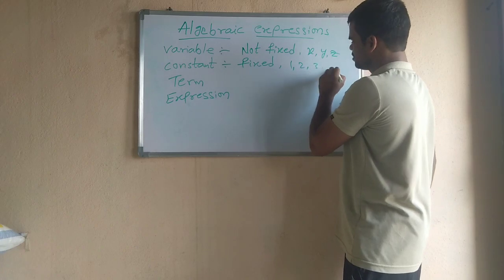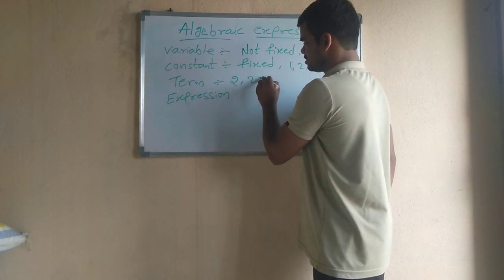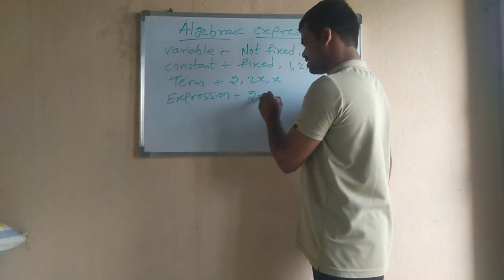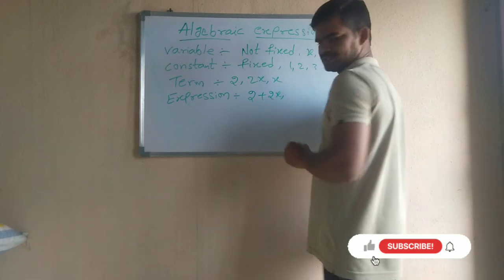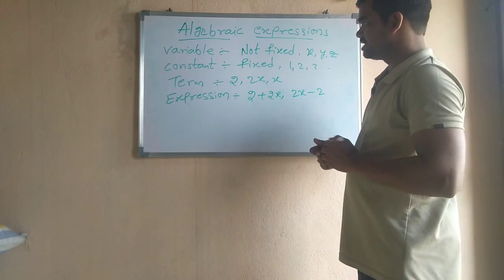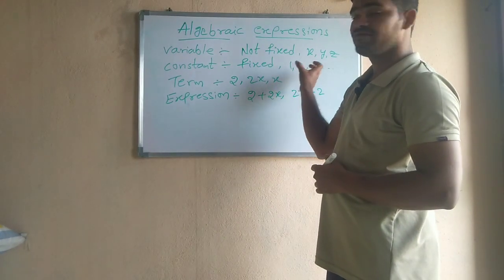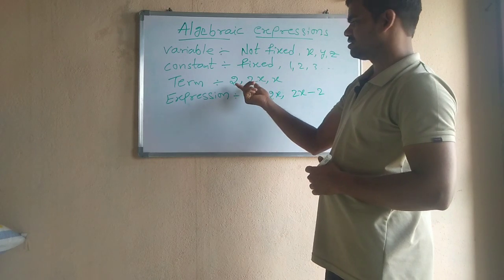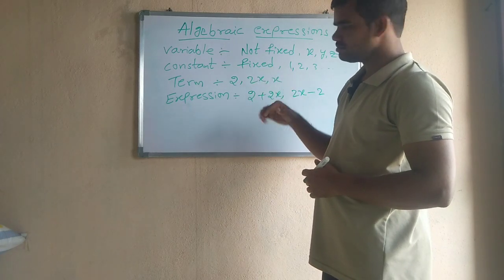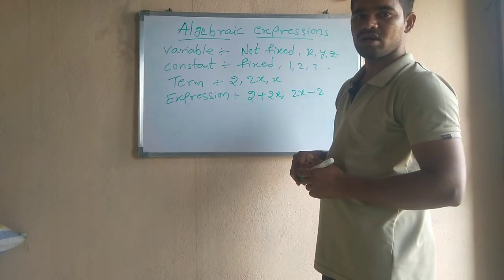A term is the combination of variables and constants. An expression is nothing but terms which are separated by a plus or minus symbol. So, term is either a variable, a constant, or a combination of variable and constant. And expression is terms separated by a plus or minus symbol.